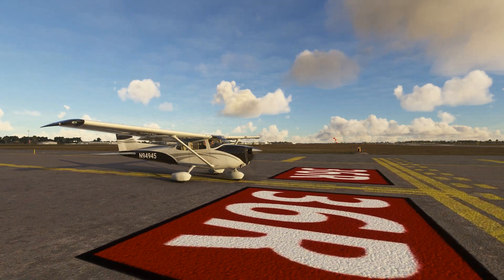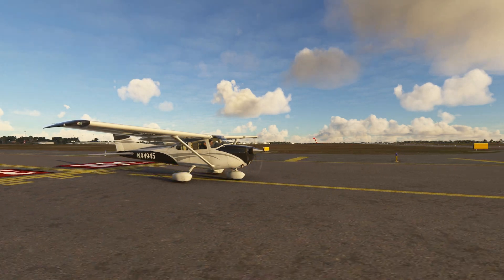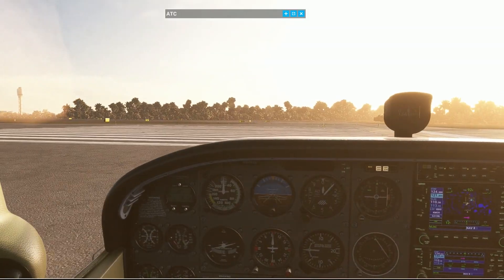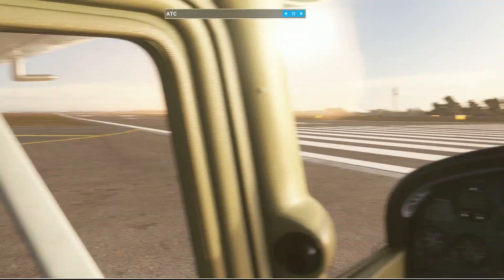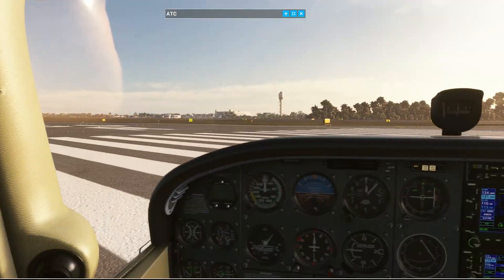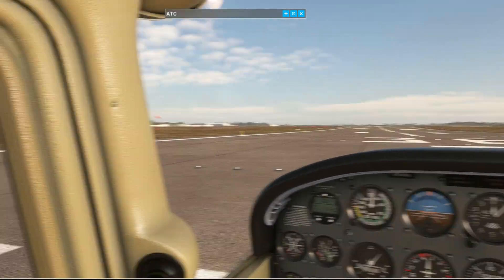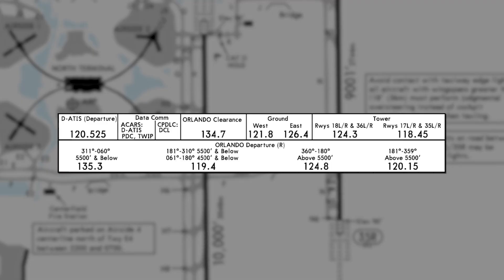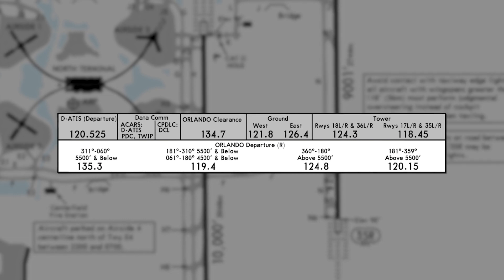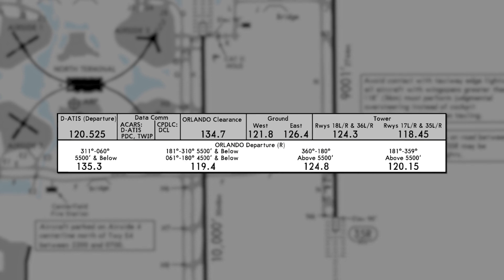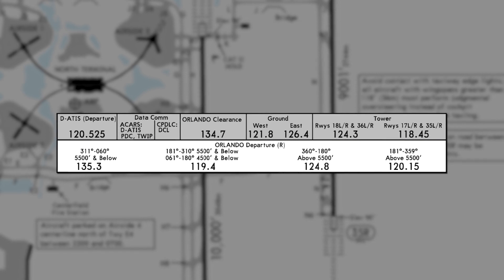Always check your final approach to ensure there's no aircraft on final, especially on VATSIM — you never know who will be there. Always look and clear the runway before taxiing onto an active runway. As we take the runway, look at the departure frequencies on the chart. 135.3 is Orlando Departure for headings 311 to 060 degrees at 5,500 feet and below.